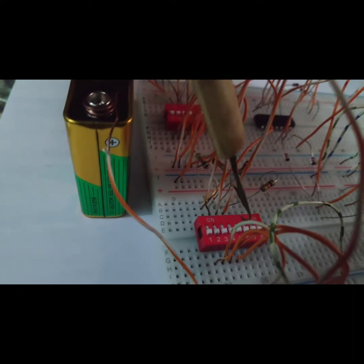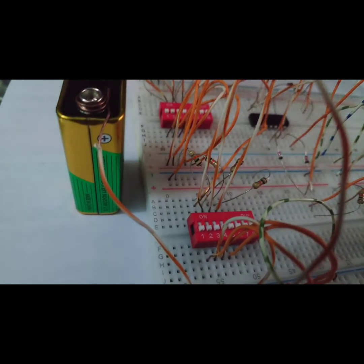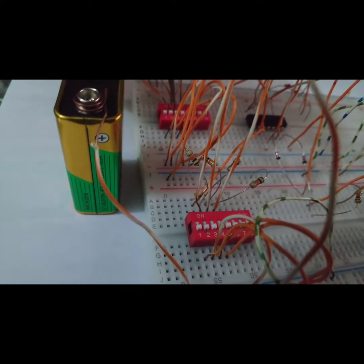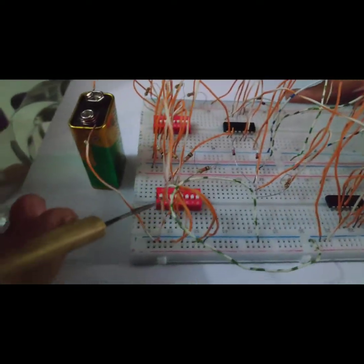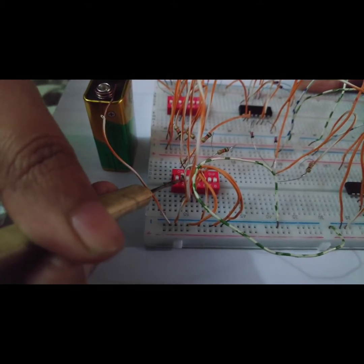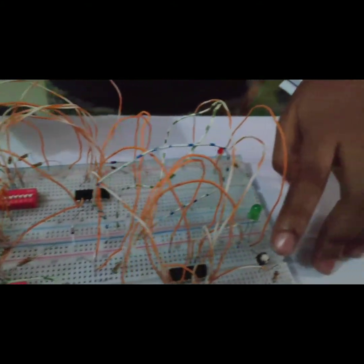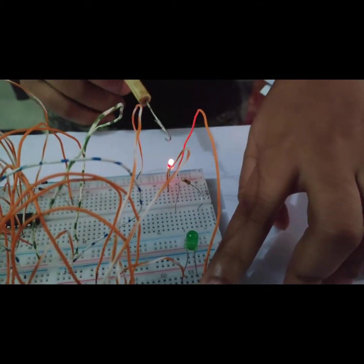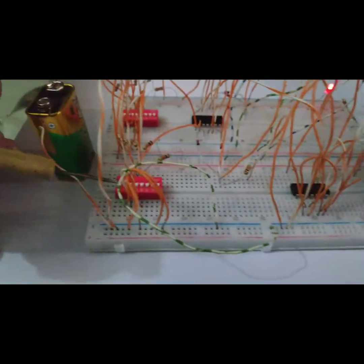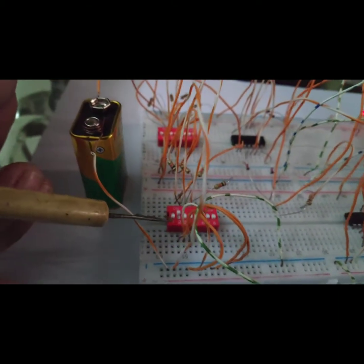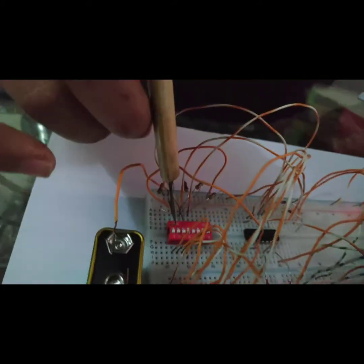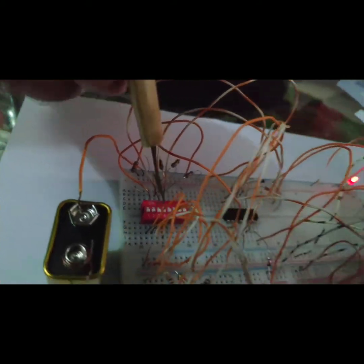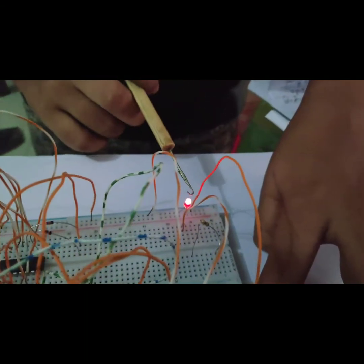Now I will change a value of data entry switch. Now I will press the push button. The red light is on. Here in data entry switch it is set as one zero one one, but the key code was set as one one one one, so it doesn't match. That's why the red light is on.